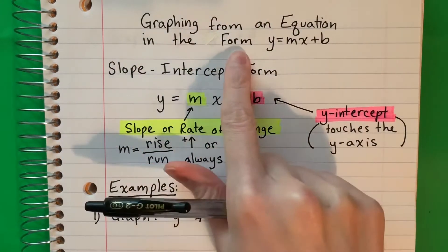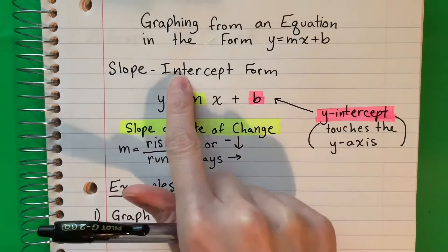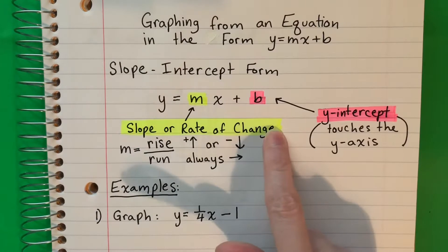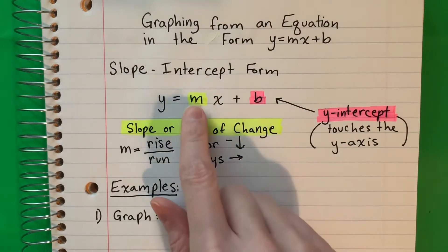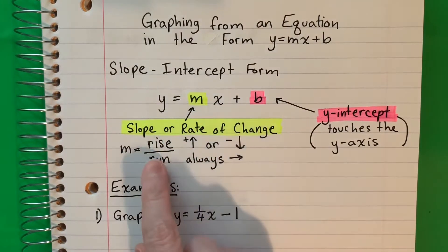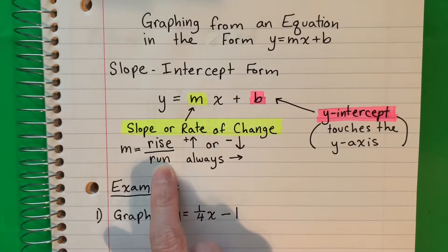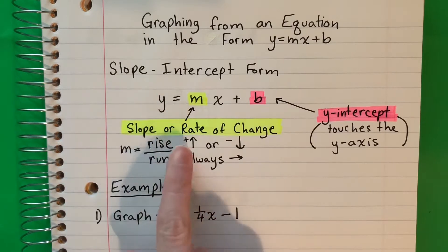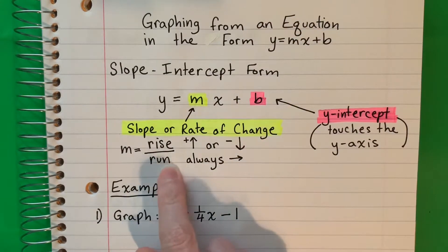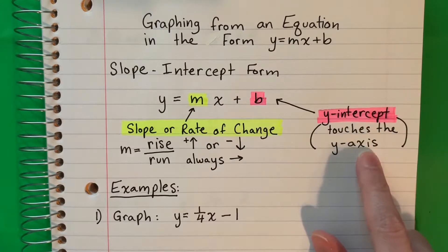Graphing from an equation in the form y equals mx plus b. This equation is called slope-intercept form because m is the slope or rate of change, and b is the y-intercept. You're going to be given a number for m and a number for b. For slope m, you'll have a ratio or fraction — the numerator is the rise and the denominator is the run. The y-intercept b always touches the y-axis.